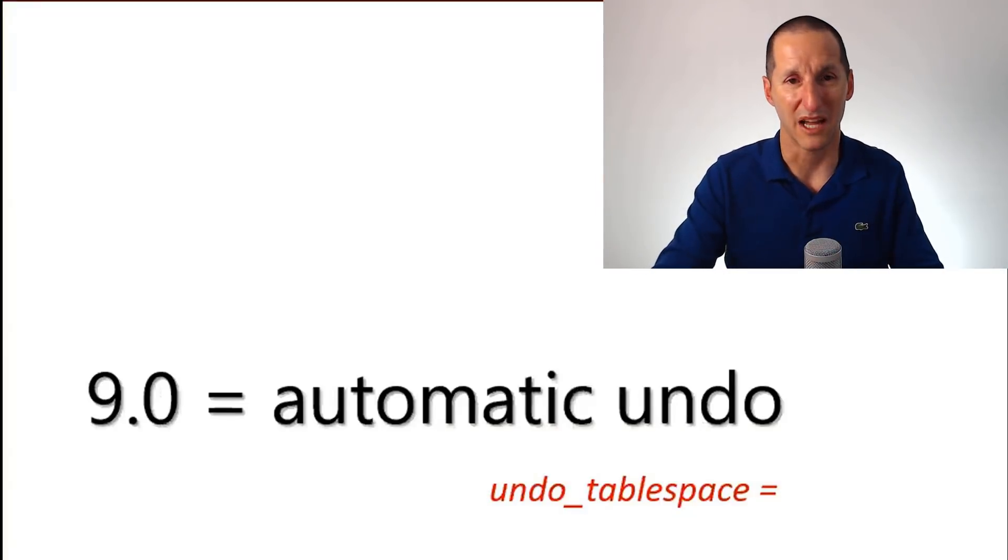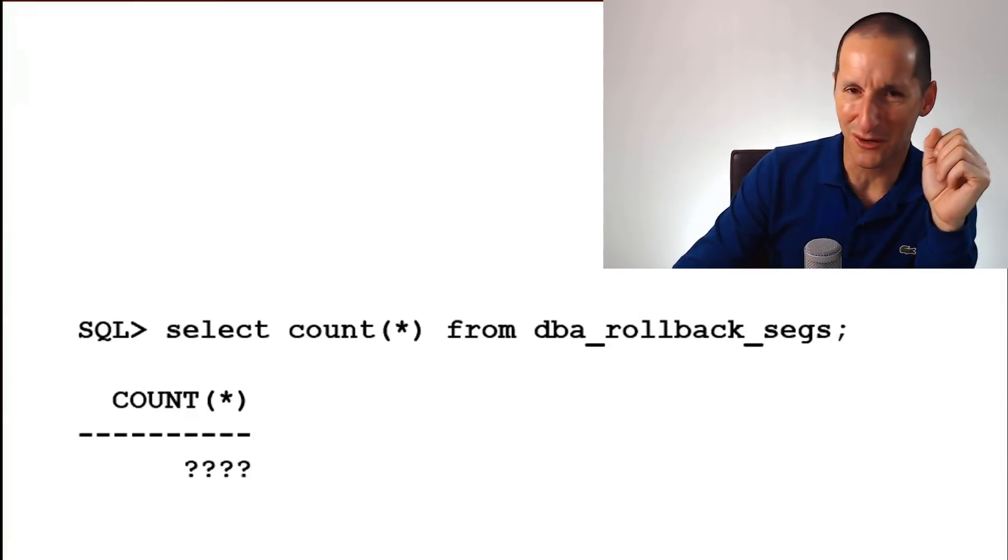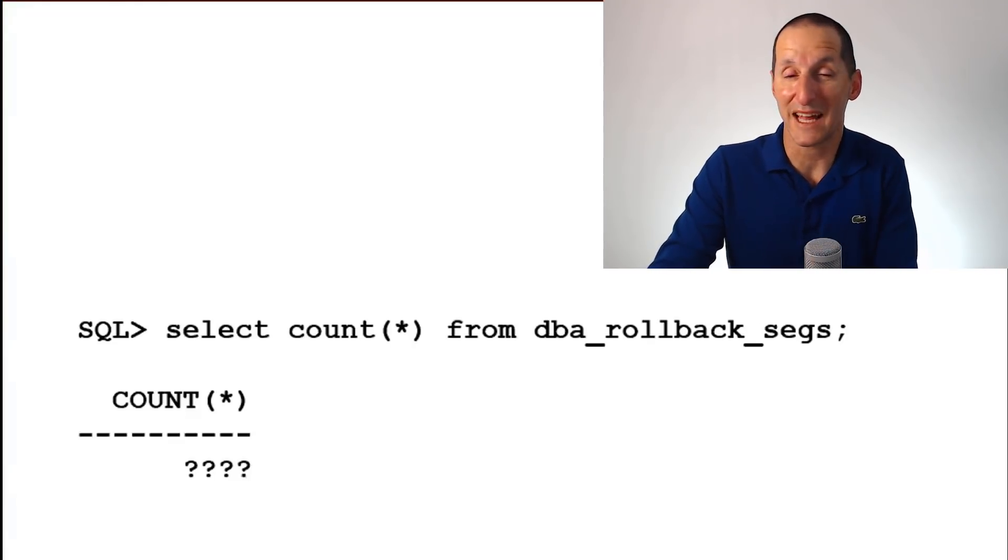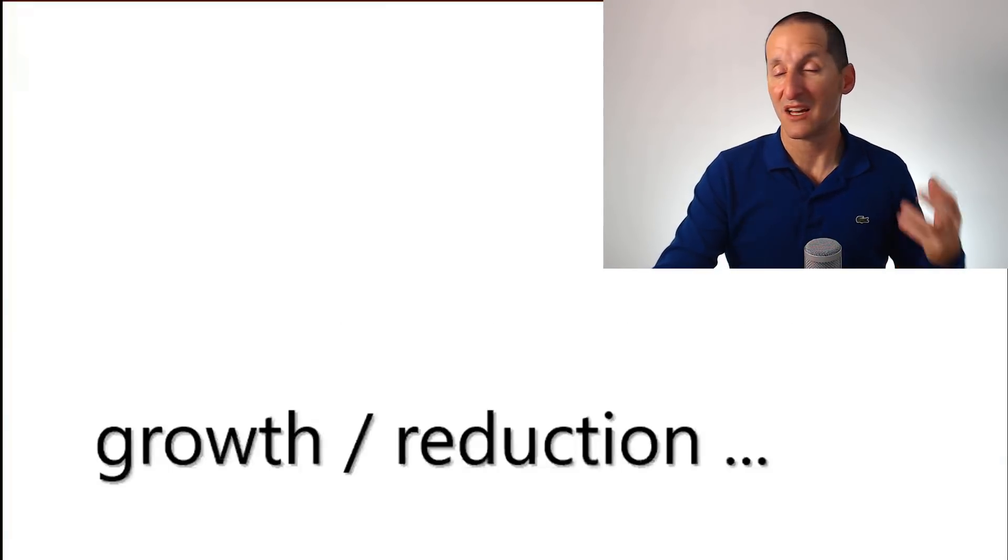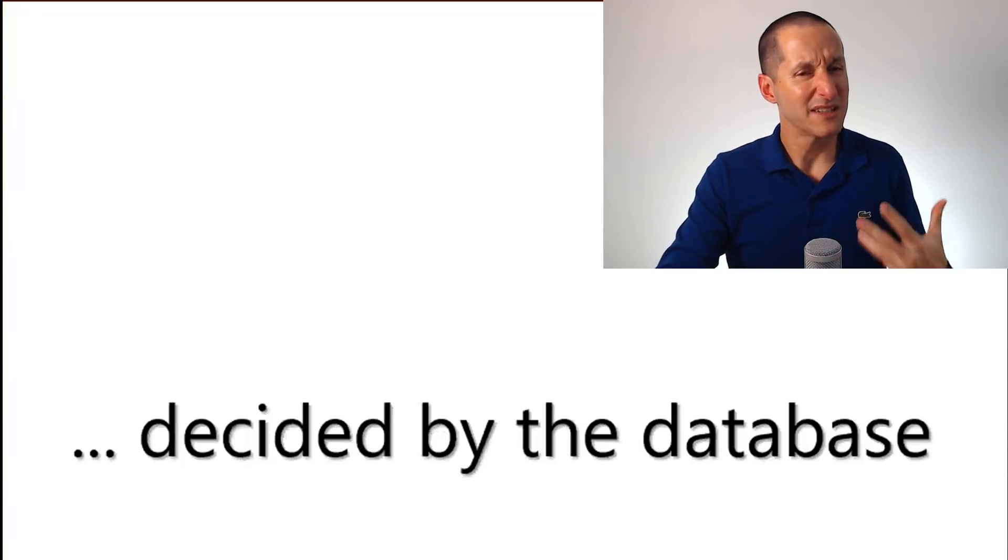It's actually more than automation though, it's different to extents because I would challenge anyone to know the result of this query before they actually ran it. No one knows how many undo segments they actually have currently in their undo tablespace because the growth and reduction of them is actually now controlled by the database. We actually allocate them as required and we remove them as well.